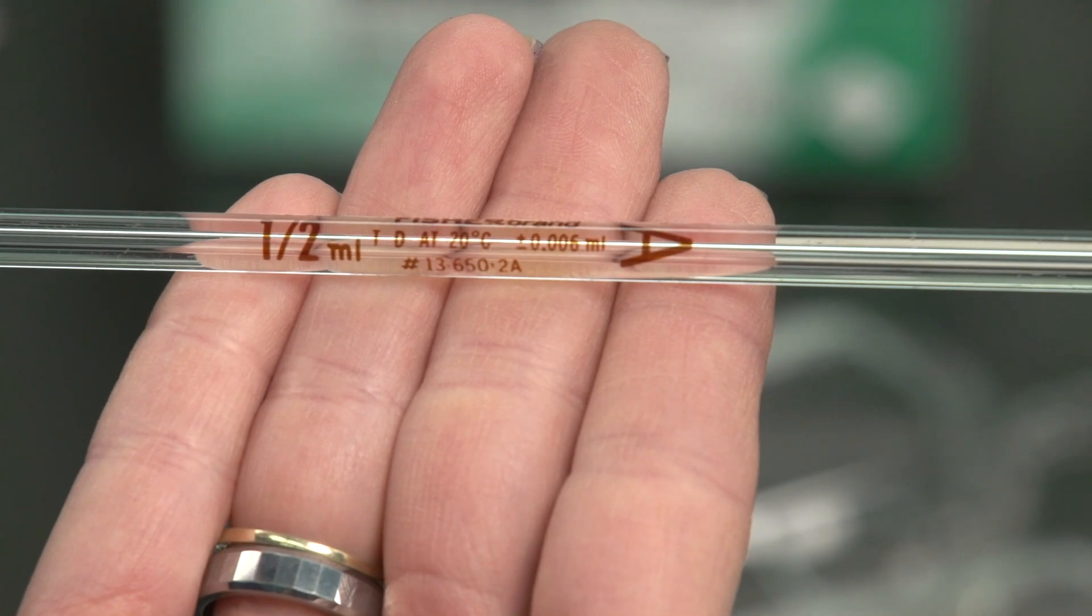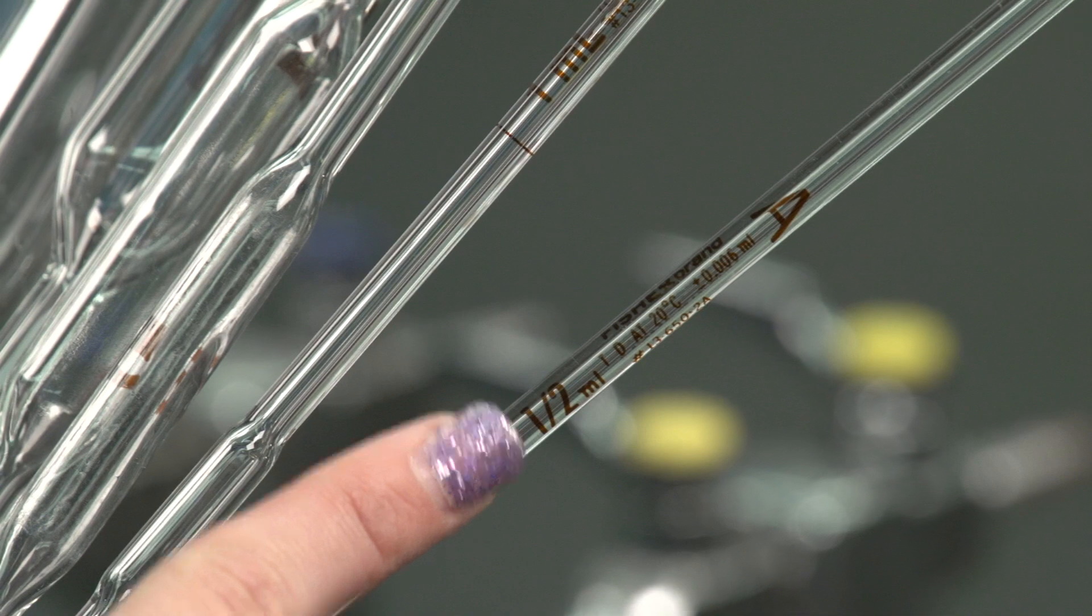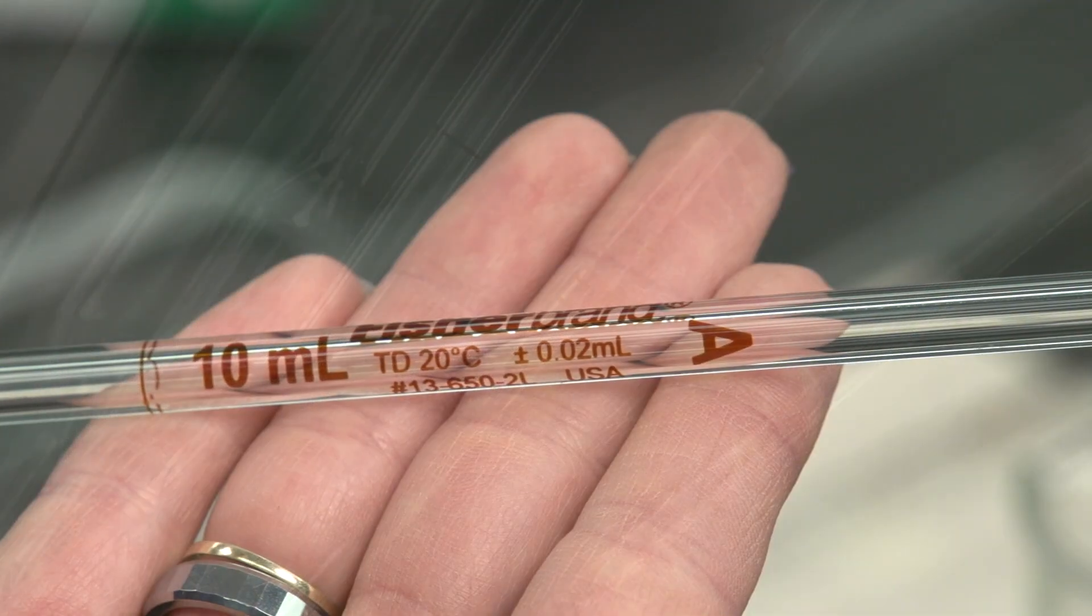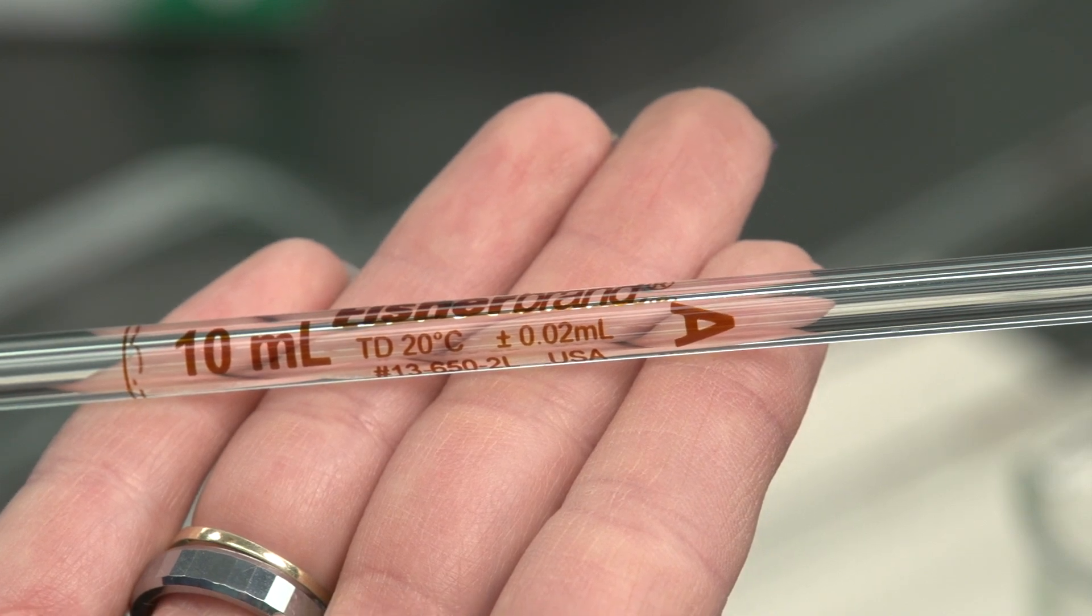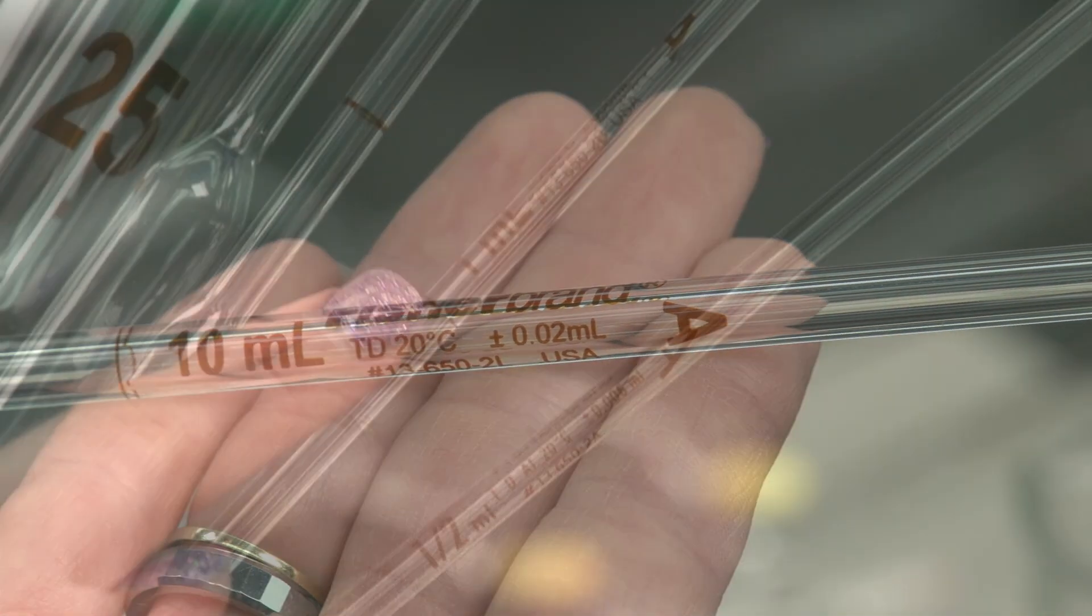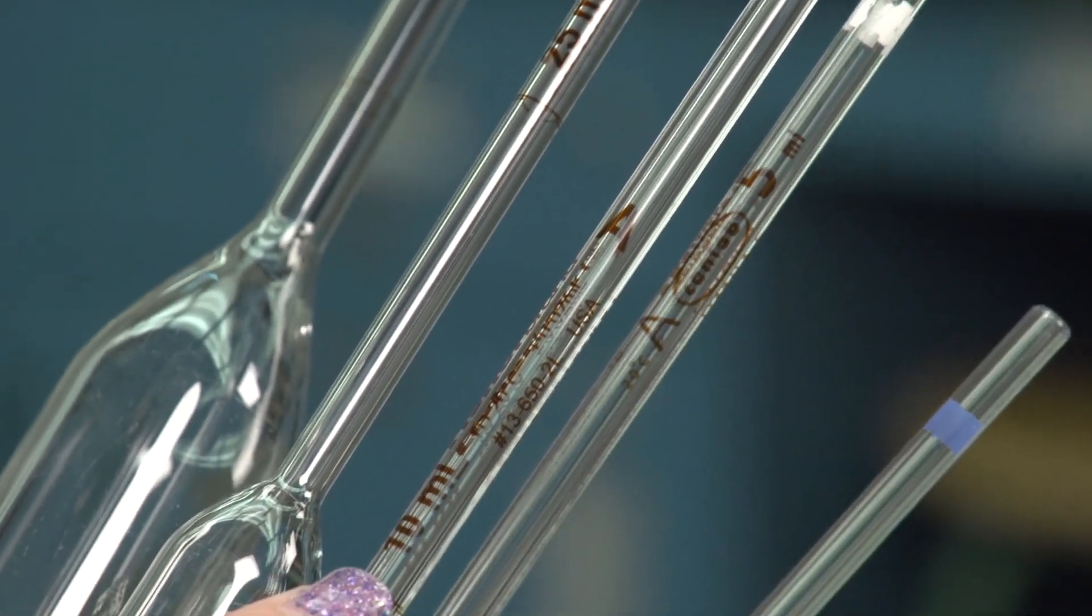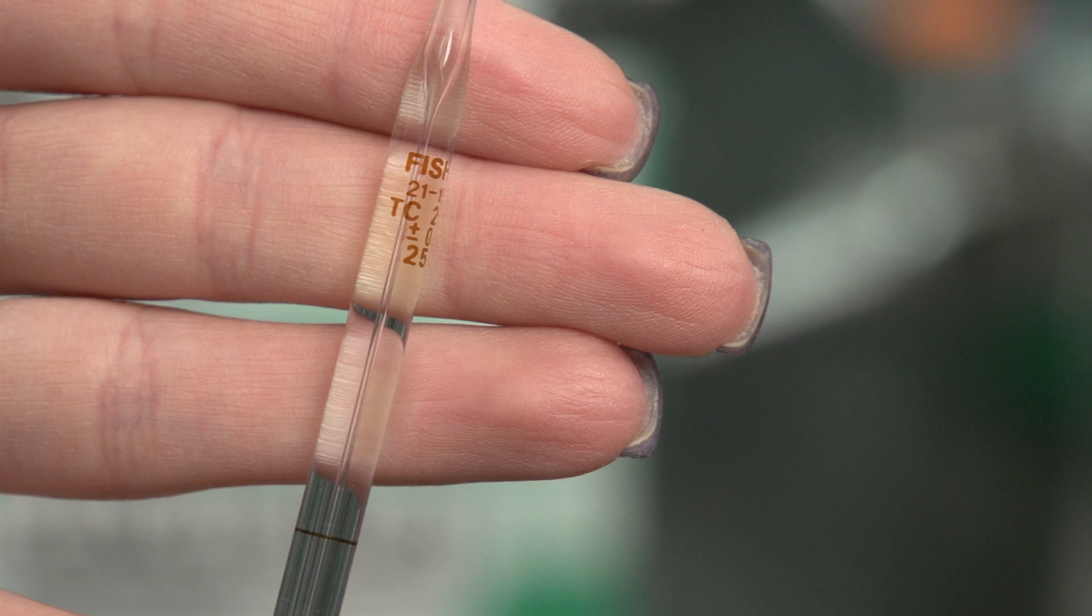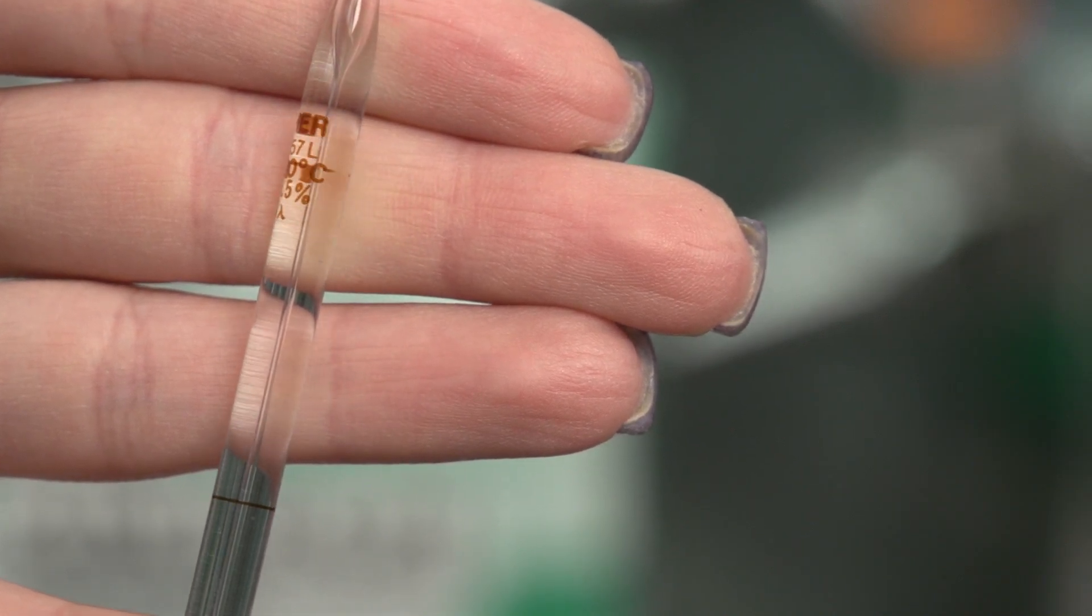The specifications indicate how much liquid will be transferred if the liquid is drawn up to the calibration line on the neck, the temperature at which the calibration was made, and whether it is a TD or a TC pipette. TD means that the pipette is calibrated to accurately deliver the specified volume of liquid. TC means that the pipette is calibrated to contain the specified volume of liquid with no remainders.